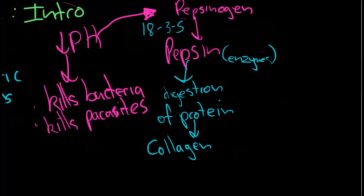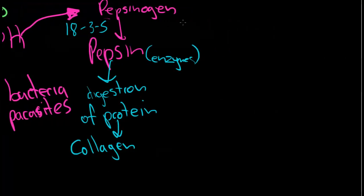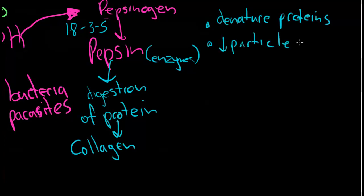What else does it do? Well, this low pH also denatures proteins. This is especially important like the cell wall of plants and that sort of thing. So it does that and it also decreases particle size, which is also important.